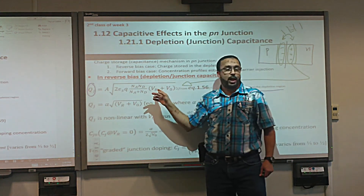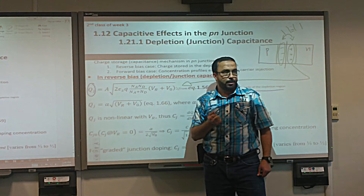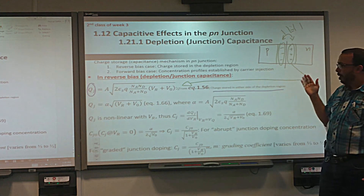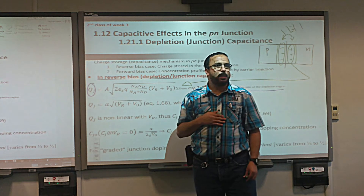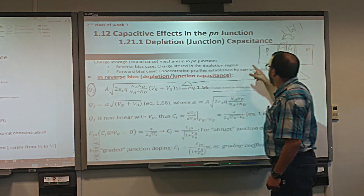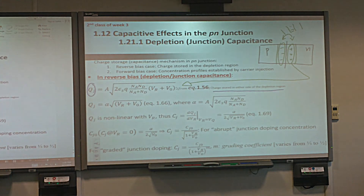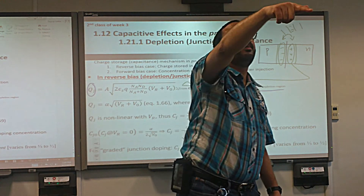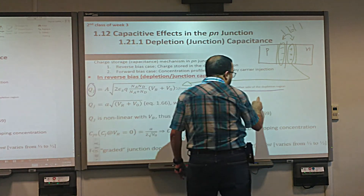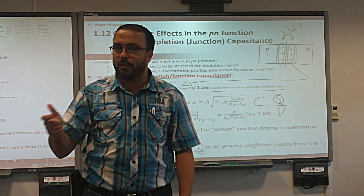If we reverse bias by one volt, it increases the depletion region, so the stored charge increases. What is the capacitance? For a normal capacitor, C = Q/V — charge stored divided by voltage. That's the formula we start from.